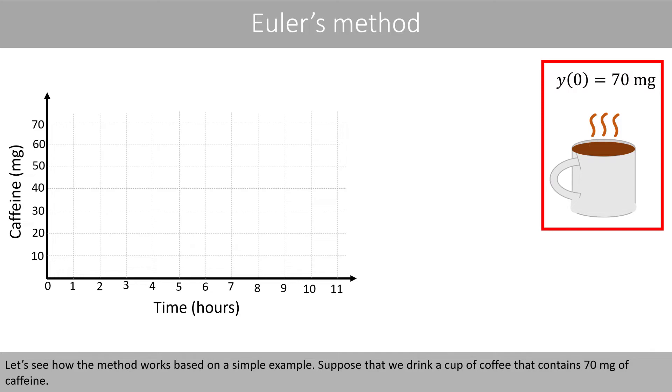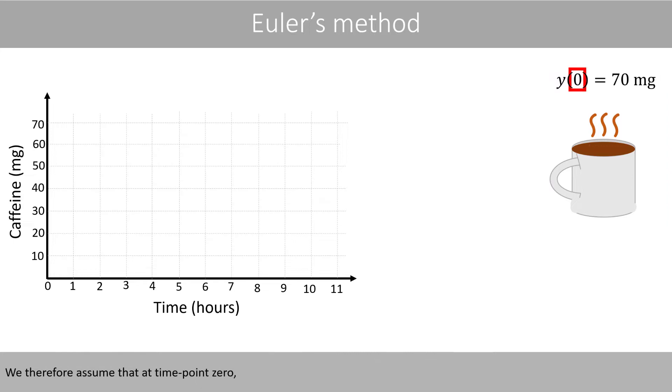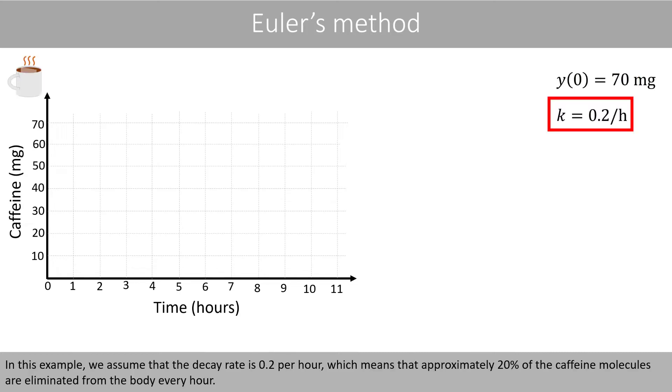Suppose that we drink a cup of coffee that contains 70 mg of caffeine. We therefore assume that at time point zero, we have 70 mg of caffeine in our body. In this example, we assume that the decay rate is 0.2 per hour, which means that approximately 20% of the caffeine molecules are eliminated from the body every hour.